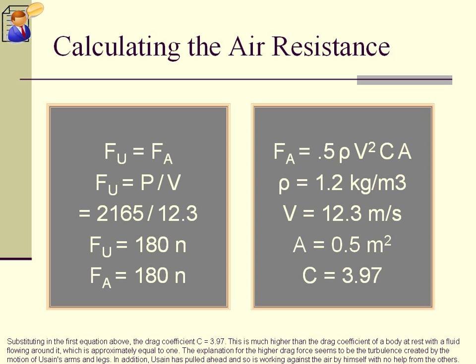This is much higher than the drag coefficient of a body at rest with a fluid flowing around it, which is approximately equal to 1. The explanation for the higher drag force seems to be the turbulence created by the motion of Usain's arms and legs. In addition, Usain has pulled ahead and so is working against the air by himself with no help from the others.